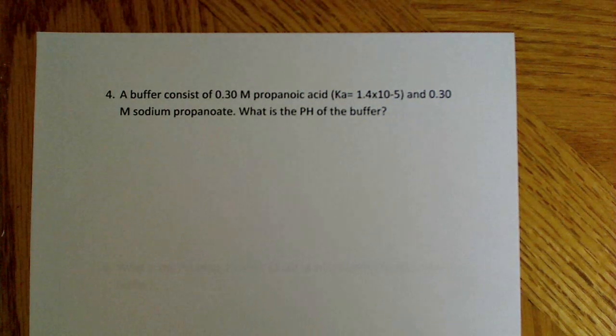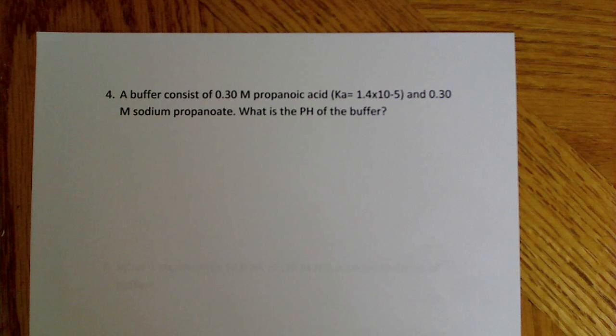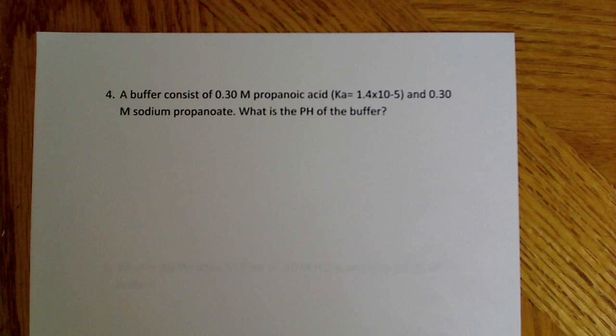So the first question says, a buffer consists of 0.30 moles of propanoic acid, with a Ka of 1.4 times 10 to the negative 5th, and 0.30 moles of sodium propanoate. What is the pH of the buffer?